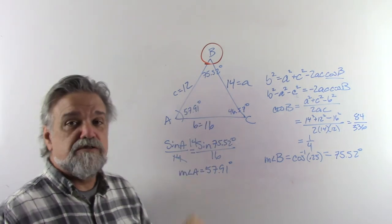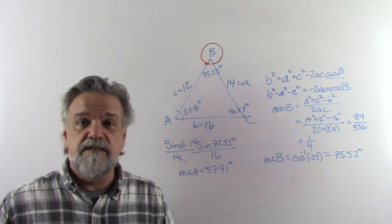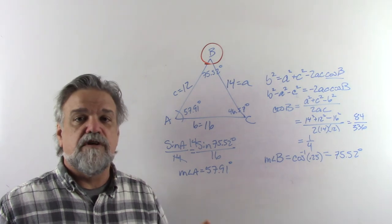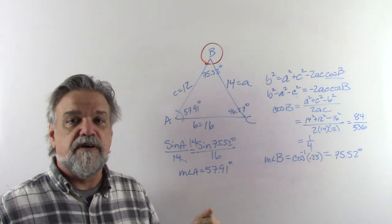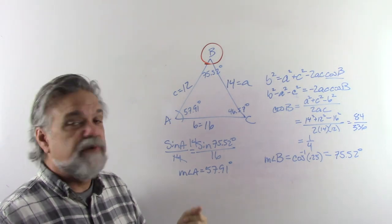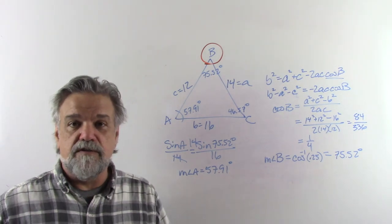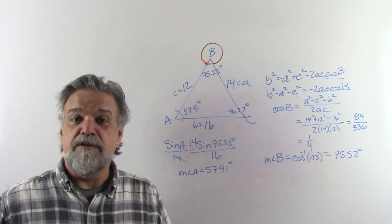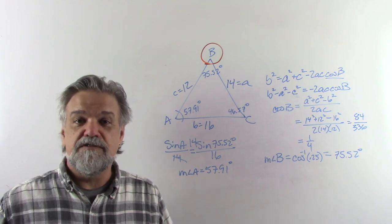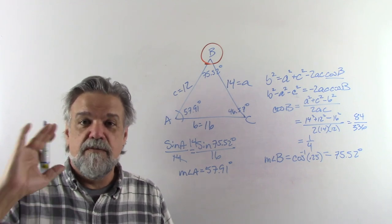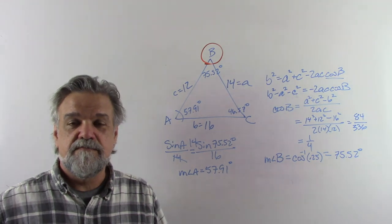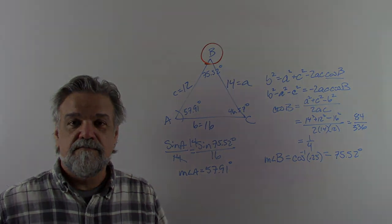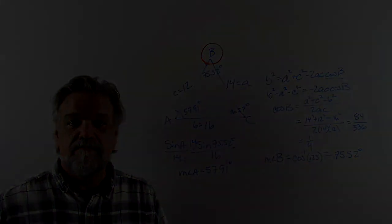If you have the measures of all the sides, you can use the law of cosines to find the measures of all the angles. I hope this has been illuminating for you, and I'll see you in the next video. Bye bye!